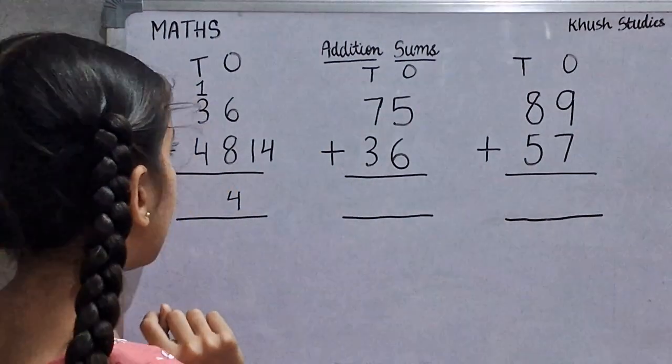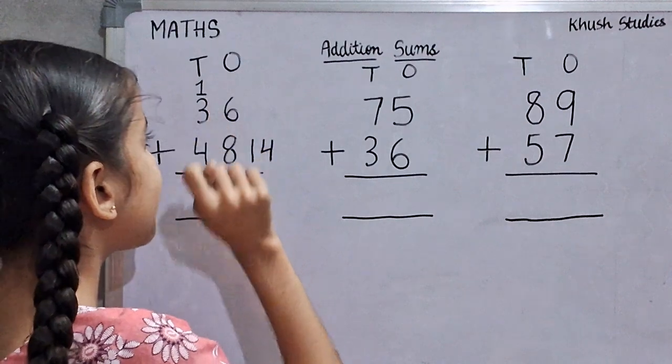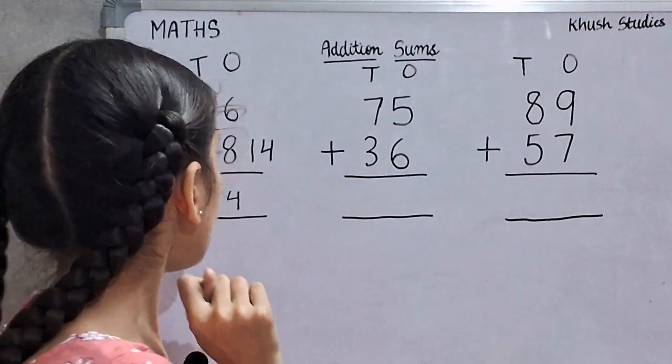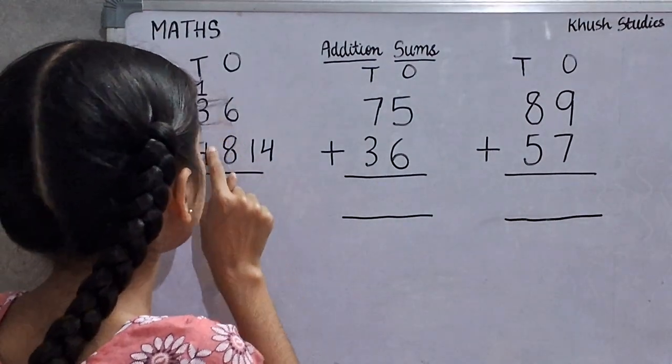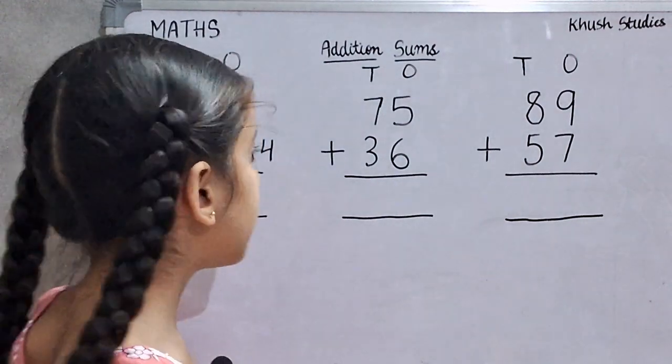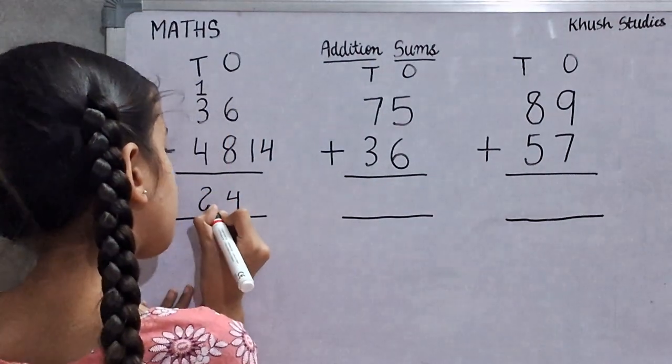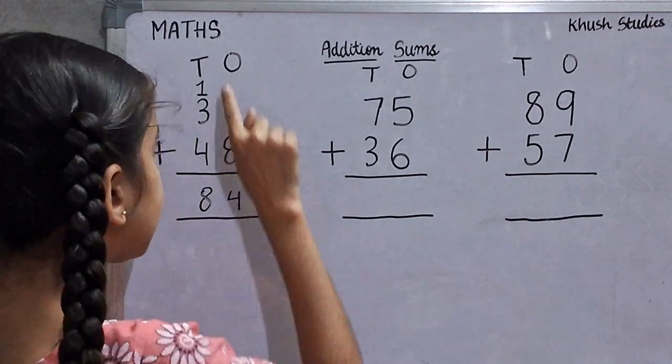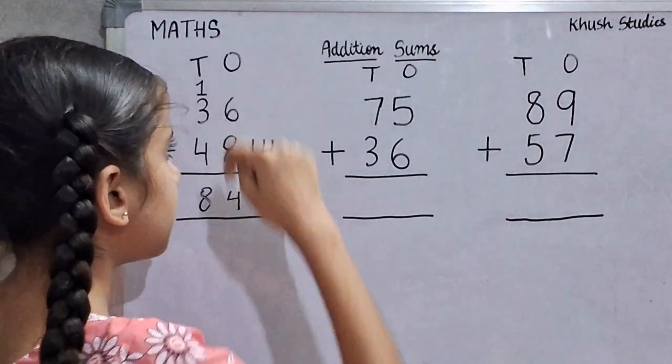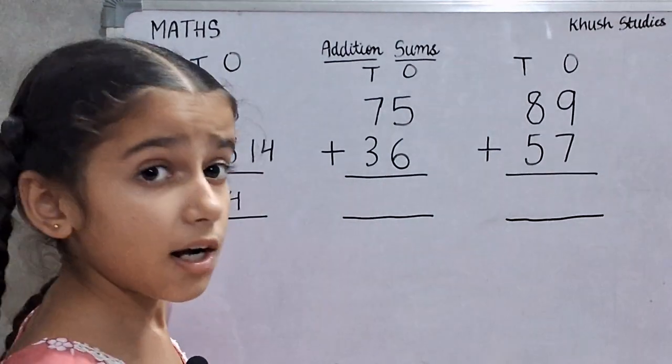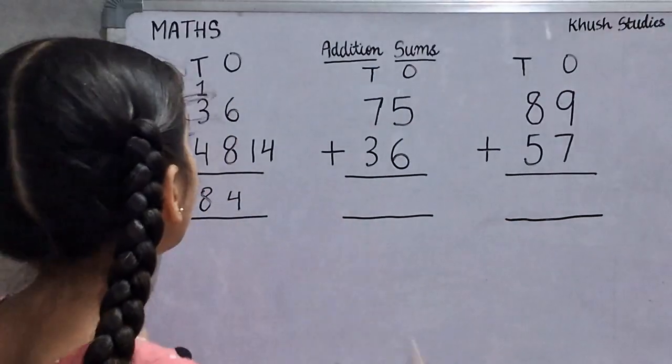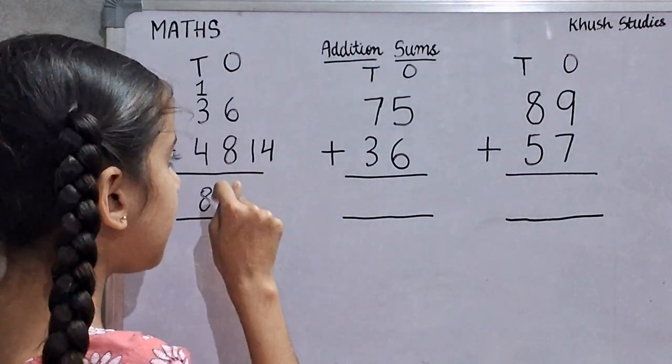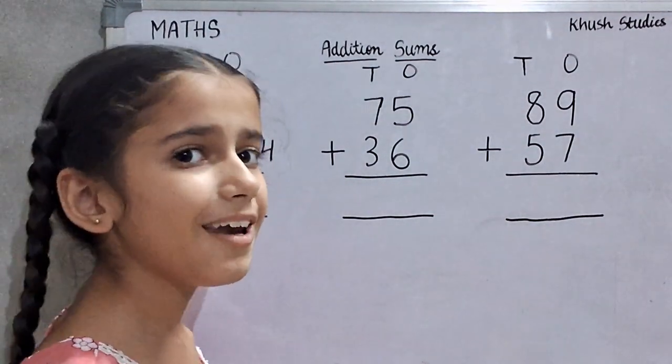Now, we will add 1 plus 3 is equal to 4. And 4 plus 4 is equal to 8. So, 8 tens and 4 ones. 84. So, 36 plus 48 is 84.